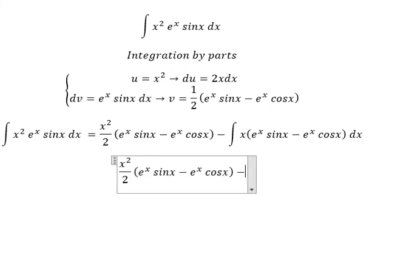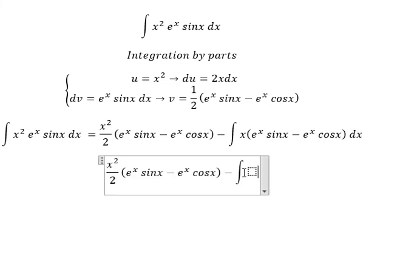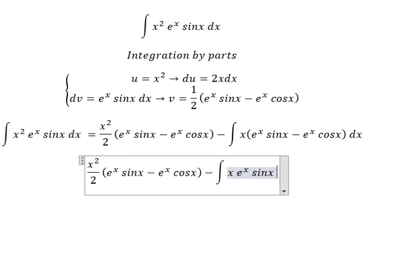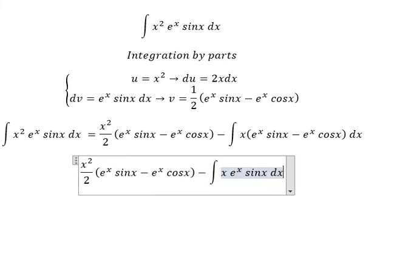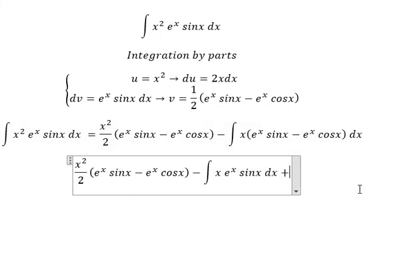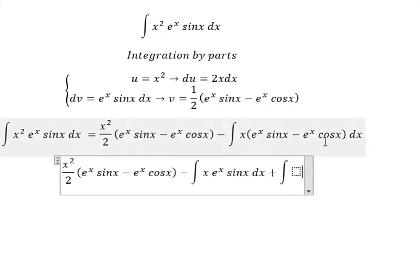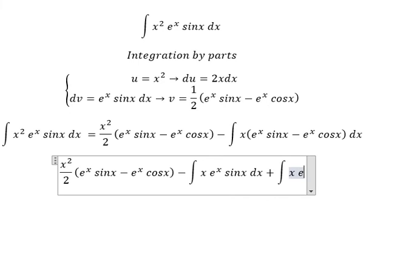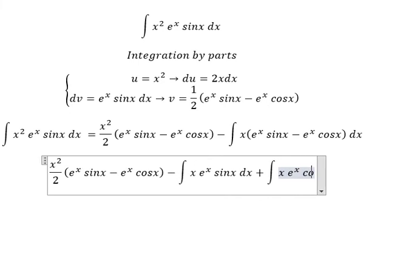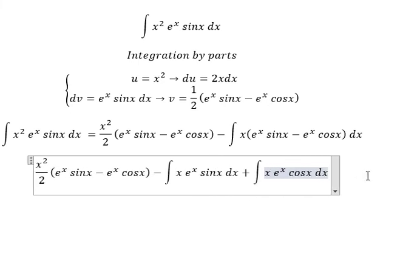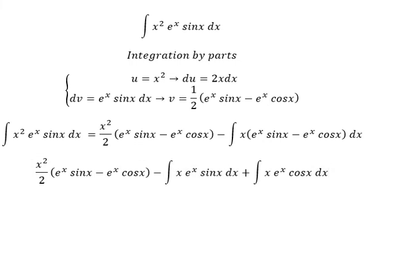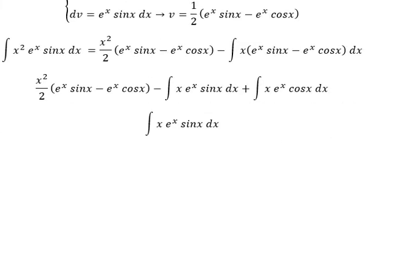So this gives us two integrals. The first one is the integral of e to the power of x cos(x). And we have negative with negative giving positive, and the second integral is also the integral of e to the power of x cos(x) dx. Now I will go to the first one, using integration by parts.